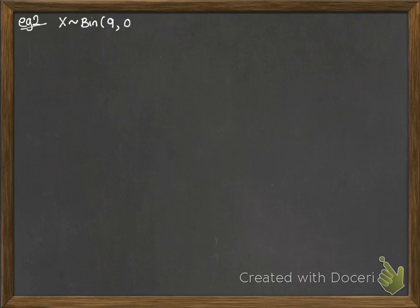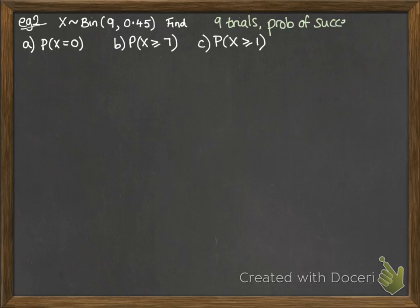Okay, example number 2 looks like this. So this is telling us x follows binomial distribution. We have 9 trials, and the probability of success is 0.45. So first one, probability of x equals 0. Put it into our formula, and it looks like this. But you can recognise that when you've got x equals 0, you can actually do this one a little bit faster, because anything to the power of 0 is 1. So we only need to do 9 failures. 0.55 to the power of 9.